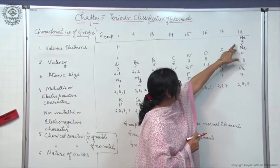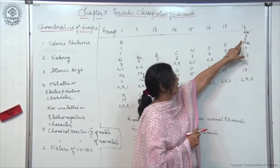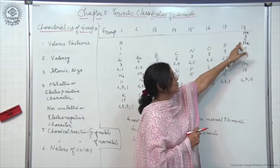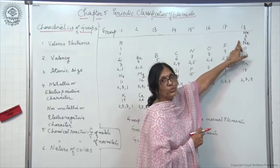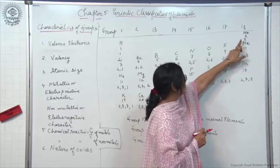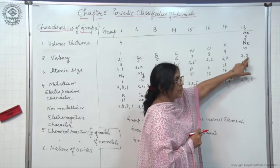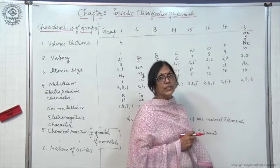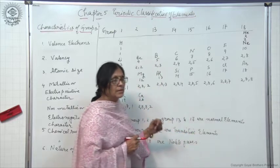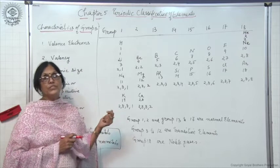Group 18 contains noble gases or inert gases. Helium has 2 valency electrons but its valency is 0, not 2. Neon: 8 minus 8 equals 0. Argon: 8 minus 8 equals 0. So the valency of all elements in a group is the same — it does not change.